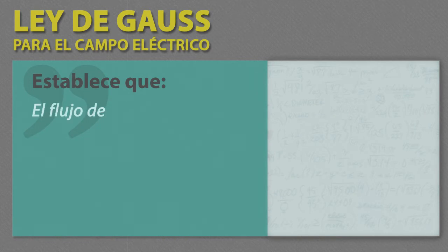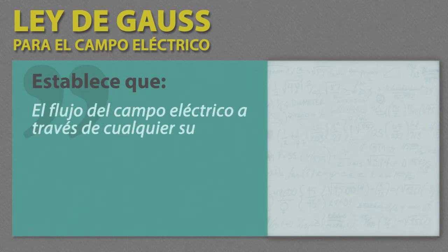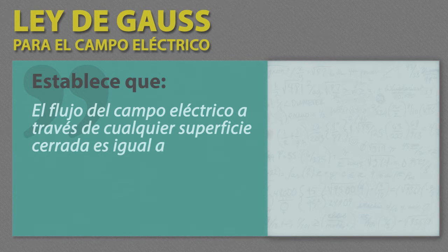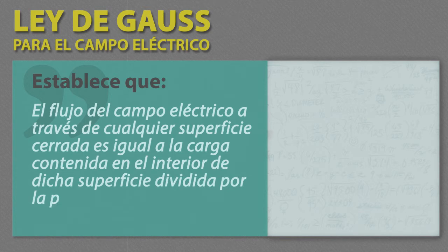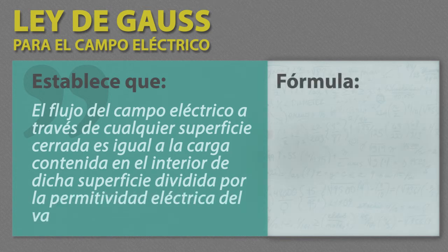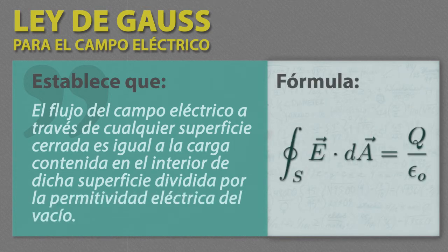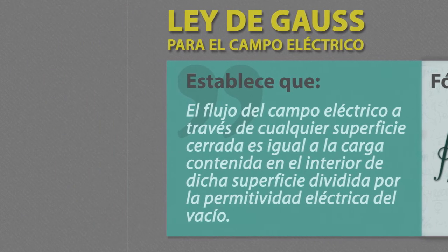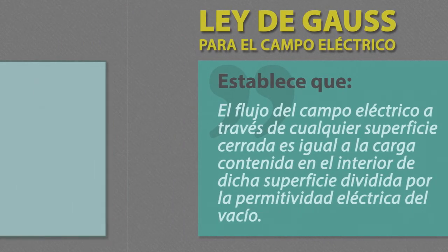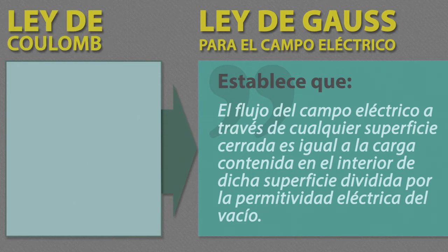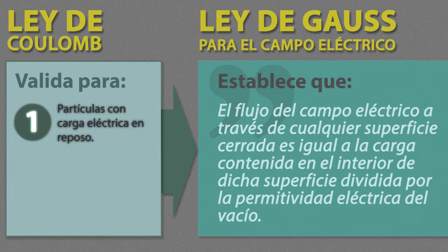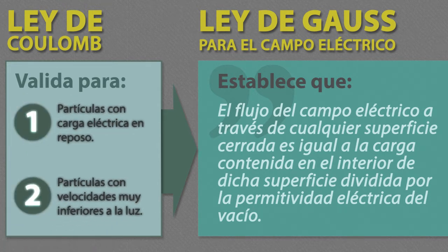Establece que el flujo del campo eléctrico a través de cualquier superficie cerrada es igual a la carga contenida en el interior de dicha superficie dividida por la permitividad eléctrica del vacío. En principio, la Ley de Gauss se deduce a partir de la Ley de Coulomb, la cual se supone que es válida para partículas con carga eléctrica que se encuentren en reposo o que se muevan con velocidades mucho menores que la velocidad de la luz en el vacío.